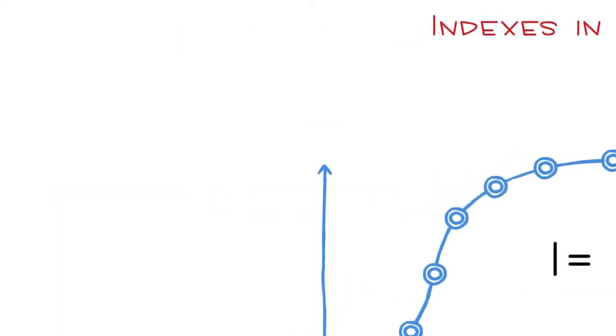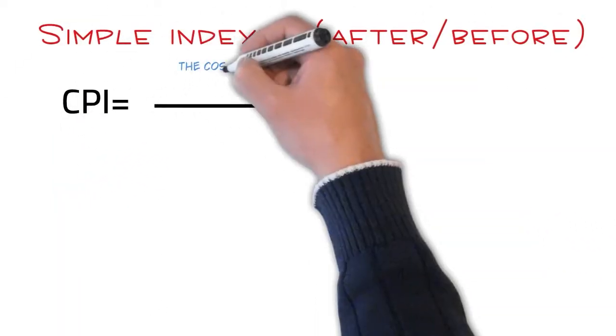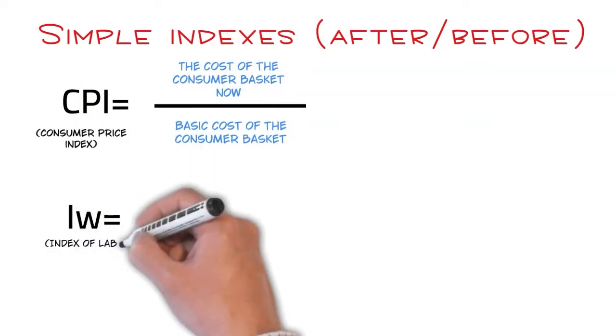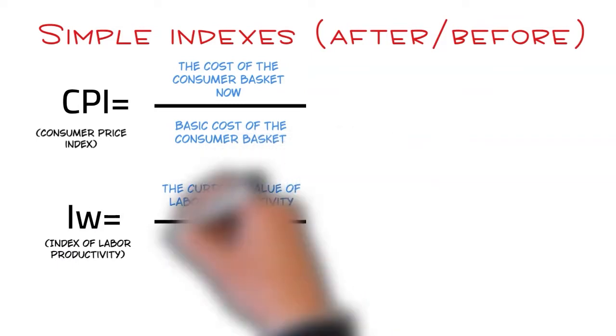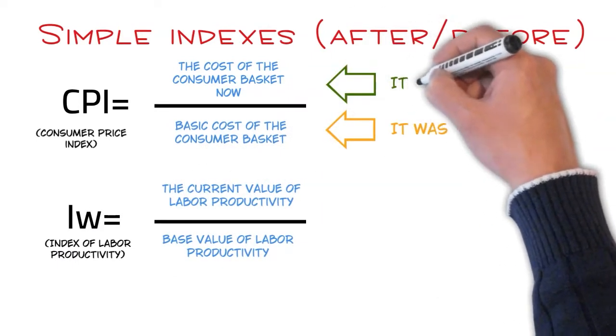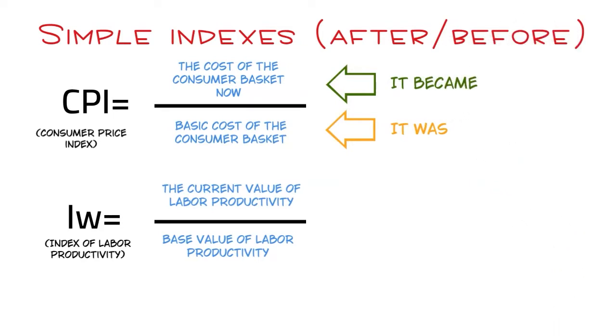Let's start with the simplest: the consumer price index and labor productivity index. The base value is taken as a reference point. We divide the current value by the base value. The result allows us to compare what was and what became, much like finding a percentage.